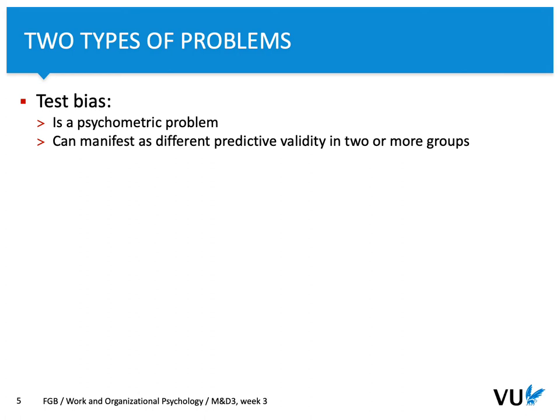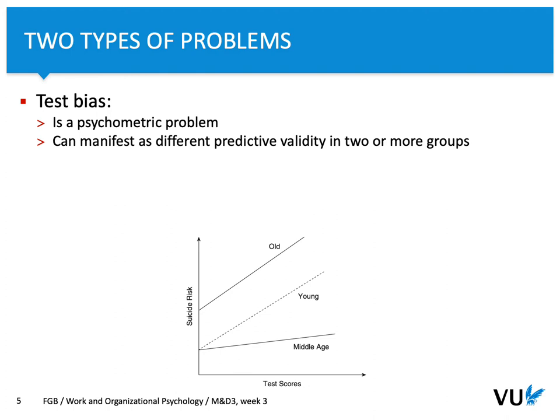Test bias can manifest as a difference in predictive validity in two or more groups. Let's consider this example: we have a test score and based on the test score we want to predict suicide risk. We can predict suicide risk in different age groups — in elderly people, younger people, and people in middle age.